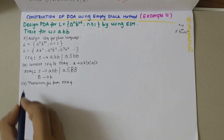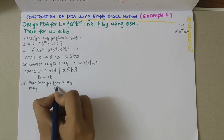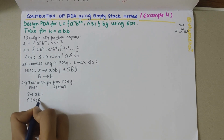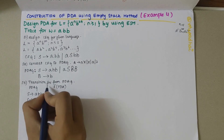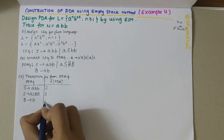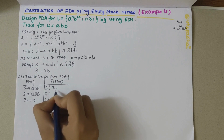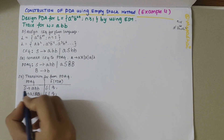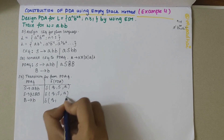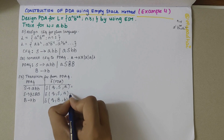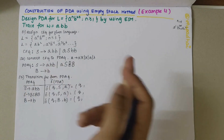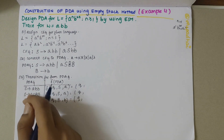My third step is to obtain the transition functions from the PDAG. The PDA grammars are: S derives abb, S derives aSBB, and B derives b. Assuming we start from state q, on top of the stack we have S and the input string. Transition of q on S and a gives us the same state q, with bb remaining on the stack for the first production.